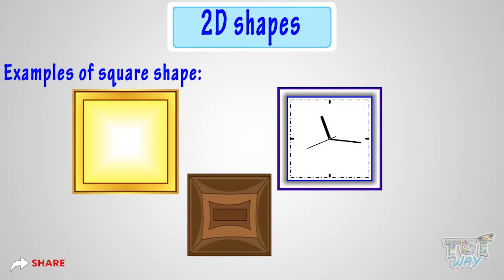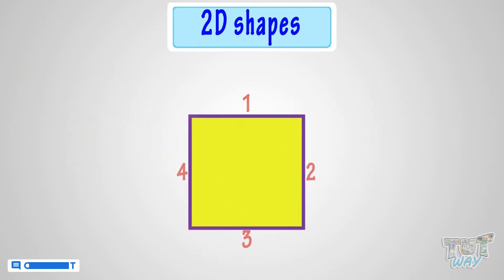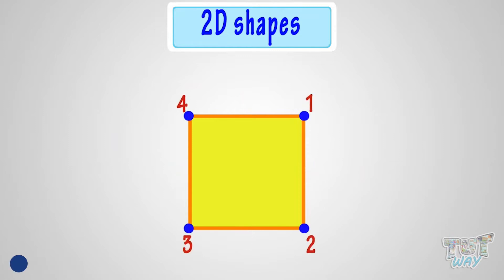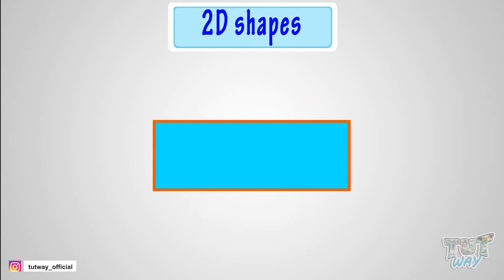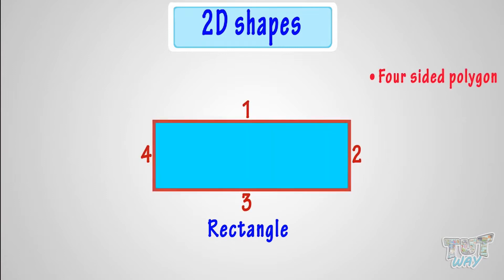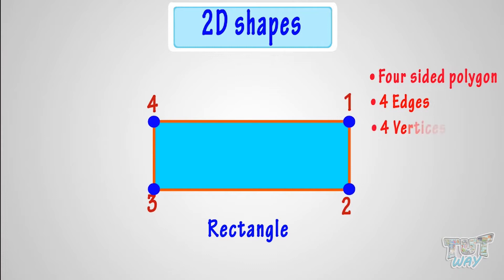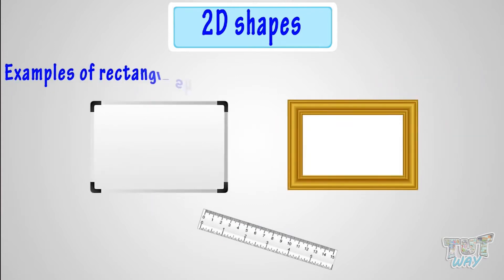Now we will be learning all shapes that have four sides — that is, four edges and four vertices. This is also a four-sided shape called a rectangle, also a four-sided polygon. Its opposite sides are equal. It, too, has four vertices and four edges. These are various things that are rectangle in shape.